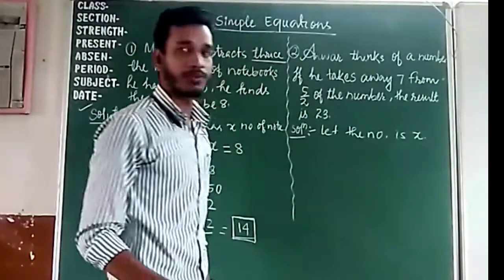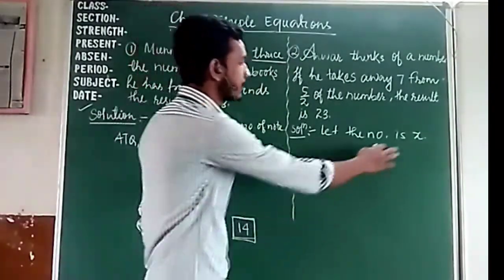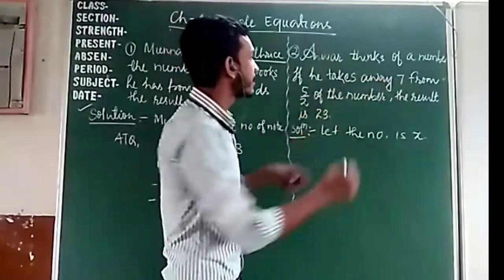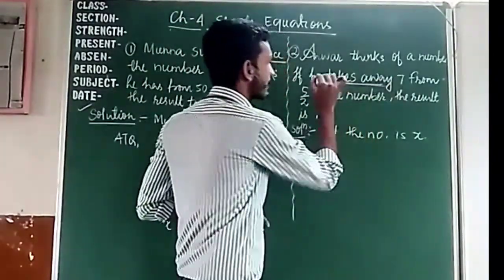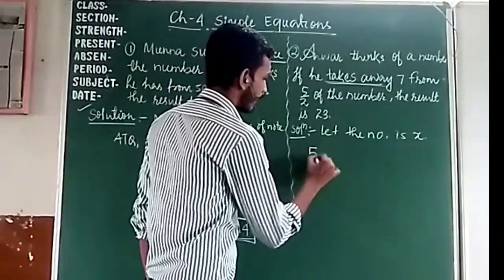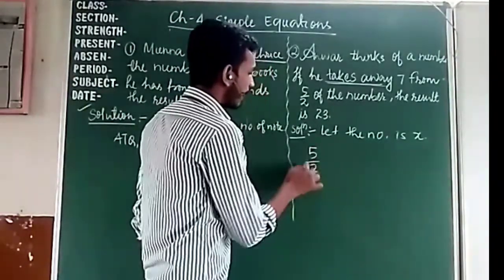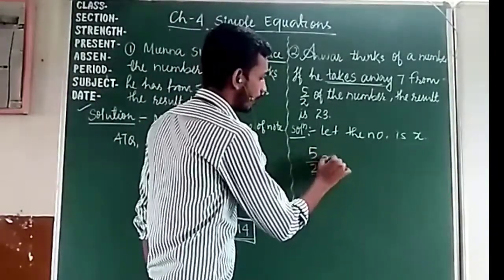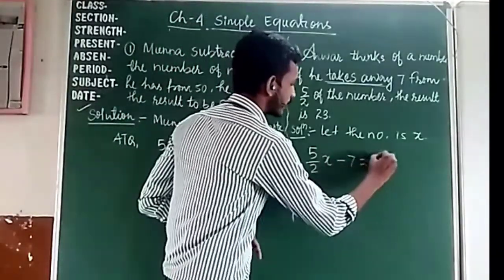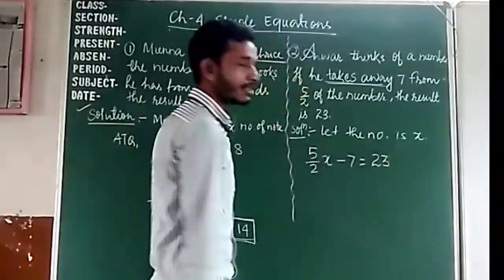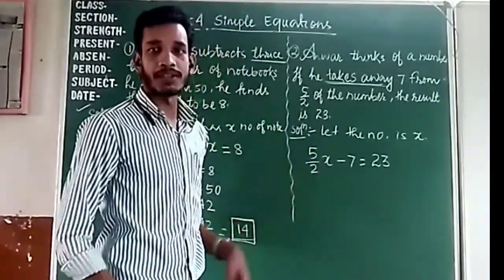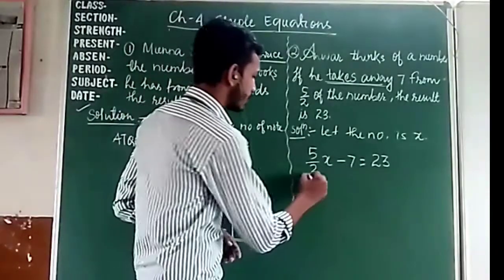We don't know the number so we take it as variable x. Then 5 by 2 of the number, and he takes away 7 — takes away means subtraction. So according to the question: 5 by 2 times x minus 7 is equal to 23. We will solve this by the transposing method.